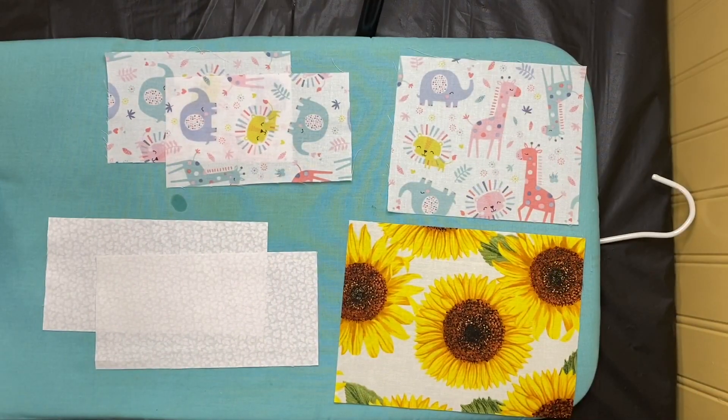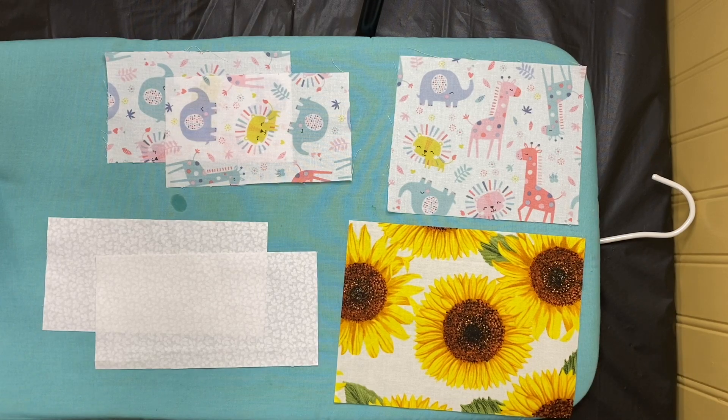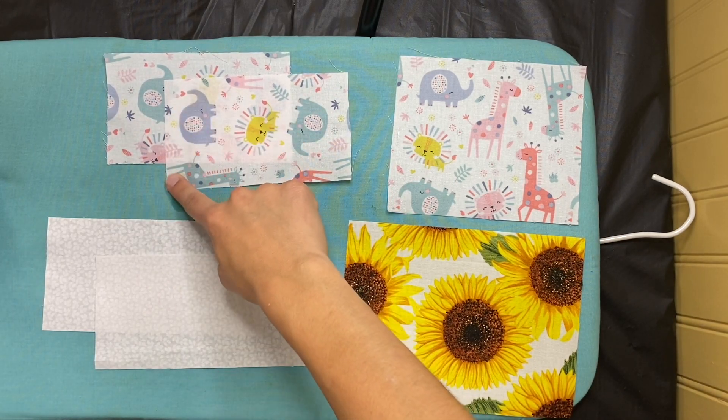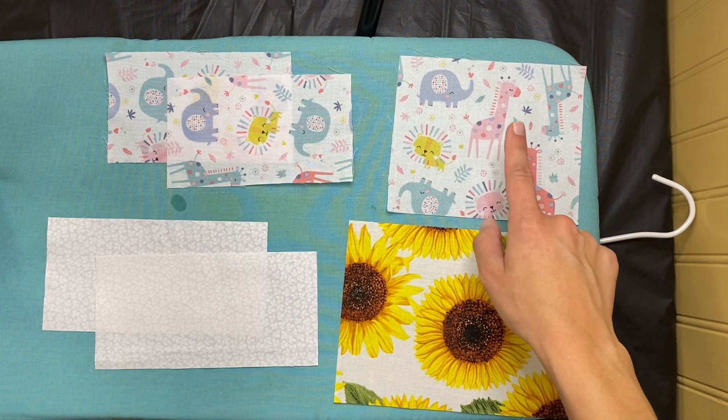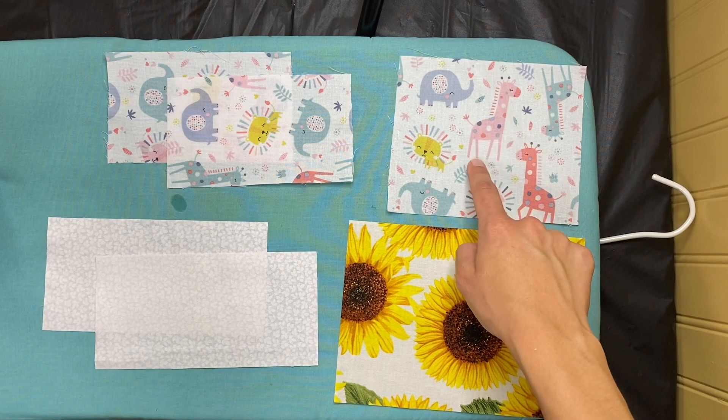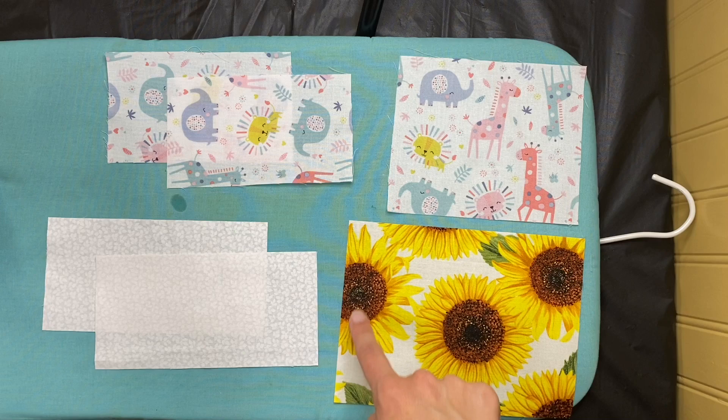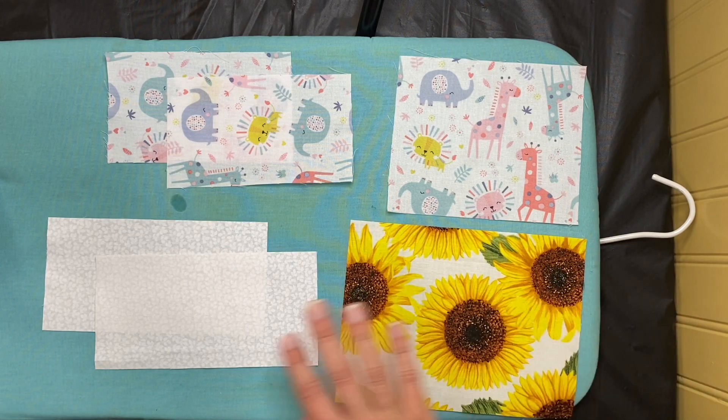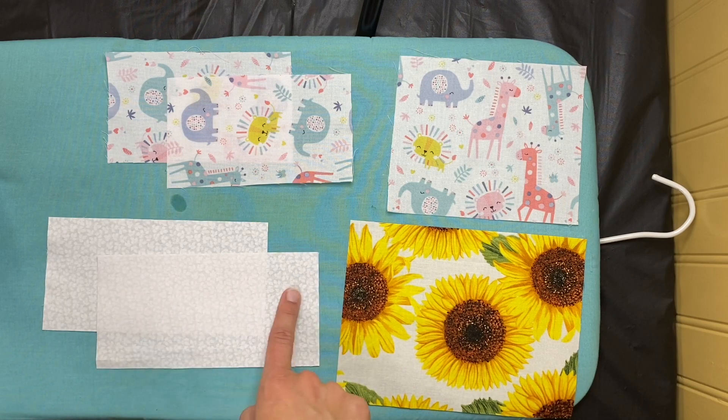First off you're going to need three pieces of fabric. If you're making the small size for the under five year olds you want two backing pieces that are three inches by six and a half inches and then you also need one front piece that is about five inches by six and a half inches. If you have a kid ages five to nine your front piece will be five and a half inches by seven and a half inches and your two back pieces will be about three and a half inches by seven and a half inches.